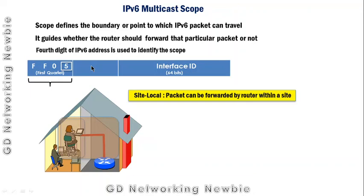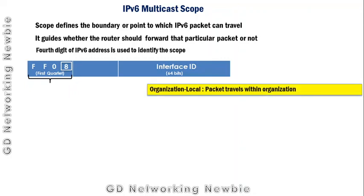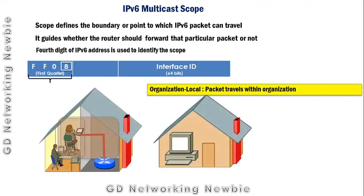When the fourth digit is 8, this represents organization-level scope. Within an organization we can have multiple buildings and multiple offices. The scope of the multicast packet is increased compared to site-local — the packet can travel further. The packet travels within the entire organization for this organization scope.